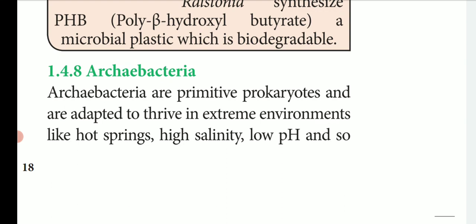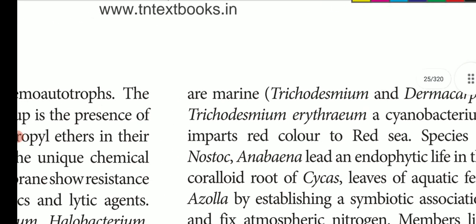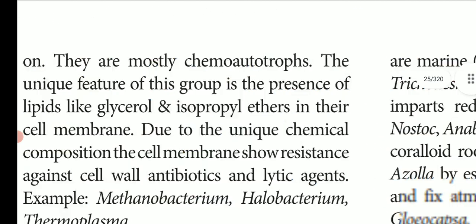That is why they are called primitive prokaryotes. If you look at their environment: hot springs, high salinity, high salt content, and low pH — soil, water, etc. They are mostly chemoautotrophs. They can prepare their own food using chemical substances like hydrogen sulfide. This is chemoautotrophy.